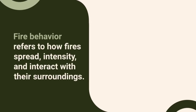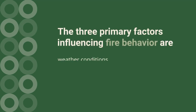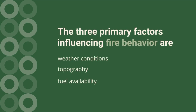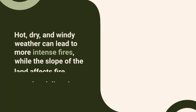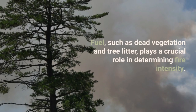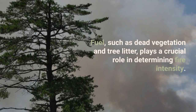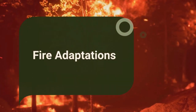Fire behavior refers to how fire spreads, its intensity, and how it interacts with its surroundings. The three primary factors influencing fire behavior are weather conditions, topography, and fuel availability. Hot, dry, windy weather can lead to more intense fires, while the slope of the land affects spread and direction. Fuels such as deadwood, vegetation, and leaf litter play a crucial role in determining fire intensity.